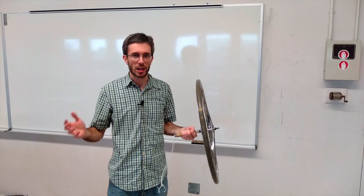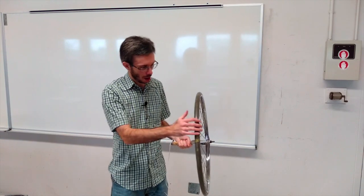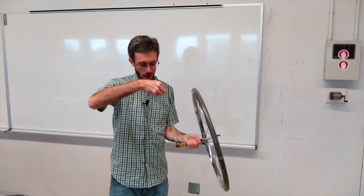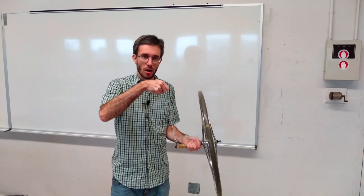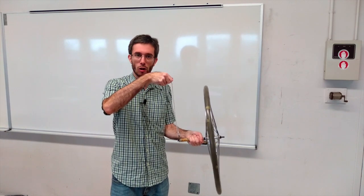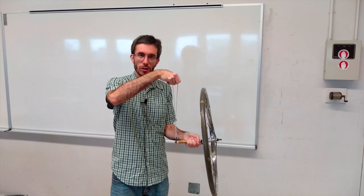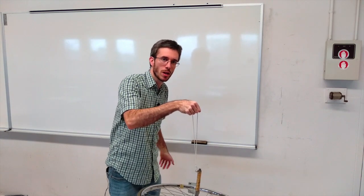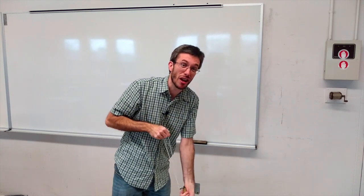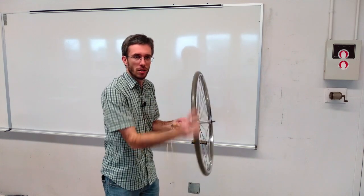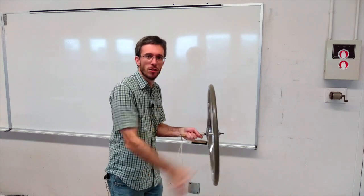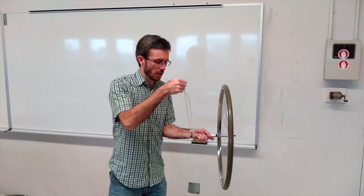Let's start with a little experiment. I have a bike wheel here that I want to hold up in the air with this string. What do you think happens if I just let go with my left hand? Well, of course it will just fall down. Now let me change one thing — before letting go, I'm going to spin my bike wheel. What do you think happens now?